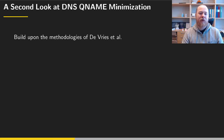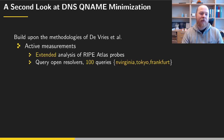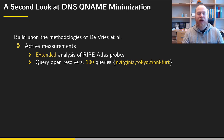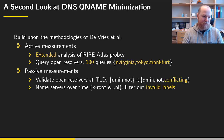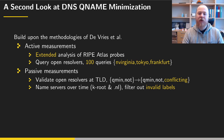We build upon the methodologies of DeVries et al. and perform active measurements. In more detail, we do an extended analysis of RIPE Atlas probe measurements that has been ongoing since the first study. We also query open resolvers, and instead of performing one query per resolver, we are doing 100 queries from three different geographical locations. For passive measurements we validate open resolvers at the top level domain, and instead of having only two categories — minimizing or not — we introduce a third category called "conflicting".